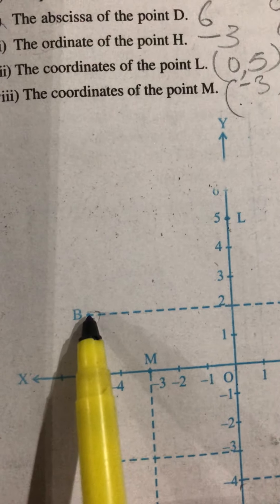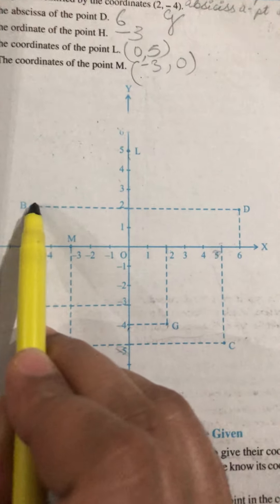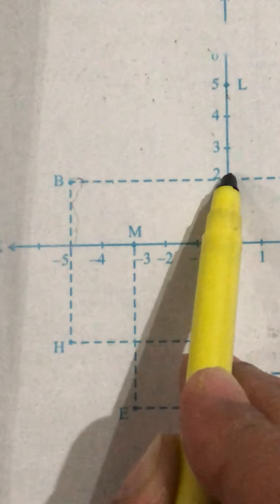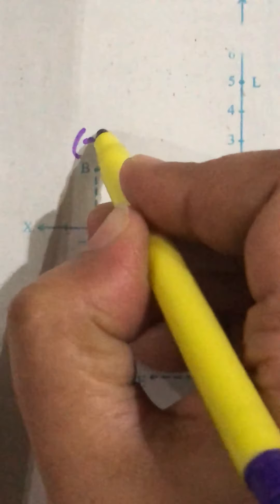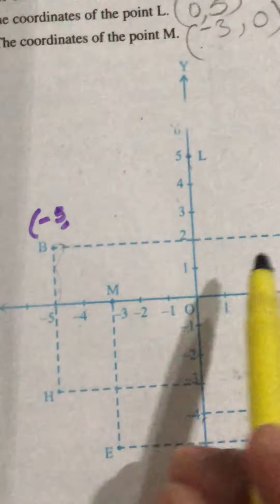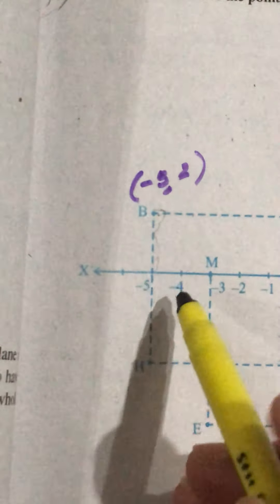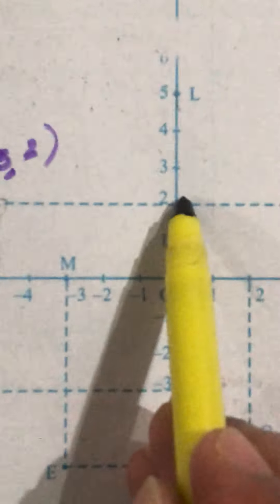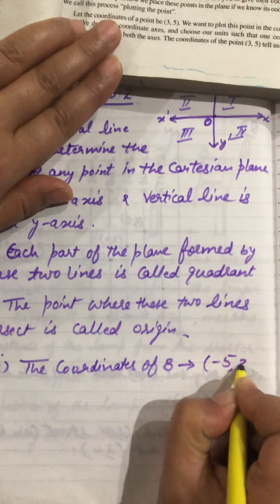The distance of point B from the y-axis — this line is parallel to the x-axis — you can see it is minus 5. The distance of this point from the x-axis, parallel to the y-axis, is plus 2. So the coordinates of B are (−5, 2). Simply, this point meets the x-axis at minus 5 and the y-axis at 2, so the coordinates are (−5, 2).